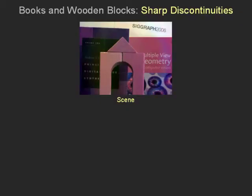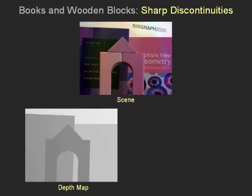Our first scene with books and wooden blocks has very sharp depth discontinuities. The temporal defocus estimation enables depth estimation independently at each pixel, preserving the sharp discontinuities between neighboring pixels. Such a depth map cannot be obtained using existing triangulation-based methods, such as stereo and structured light.